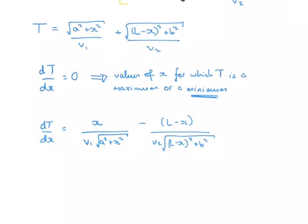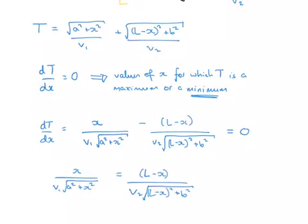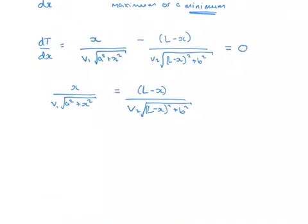Now you remember that we're trying to solve dT by dx equals zero. So if we set this equal to zero, then what we're actually saying is that this following equation must now hold. In other words, simply that this term here is equal to this term here if this whole expression is equal to zero. So we now need to solve this particular equation to find those values of x for which T is a maximum or a minimum.